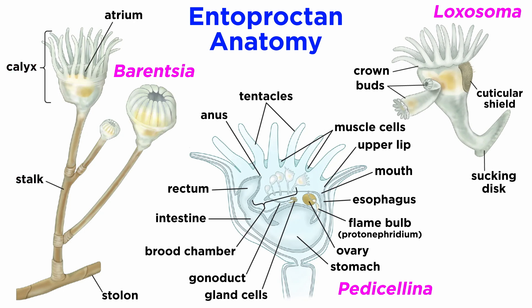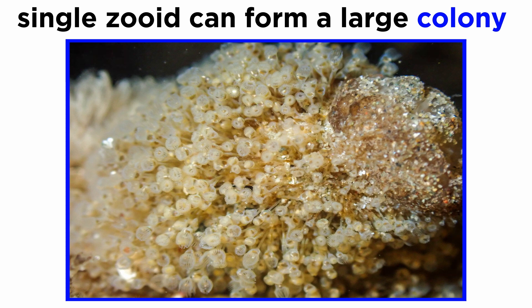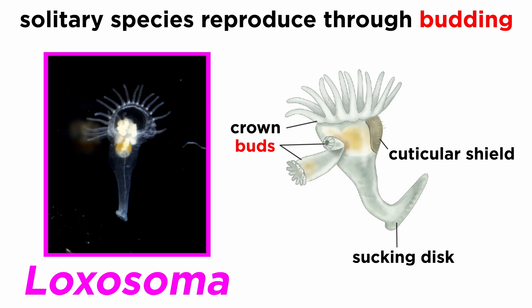In terms of reproduction, colonial species can add new clonal zooids asexually through budding, either by adding new individuals to the stalks or from growth of the stolon. In this way, a single zooid of a colonial species can form a large colony. Many solitary species can also reproduce asexually through budding, though once a clone's organs develop it is released, unlike colonial species that remain attached as zooids.